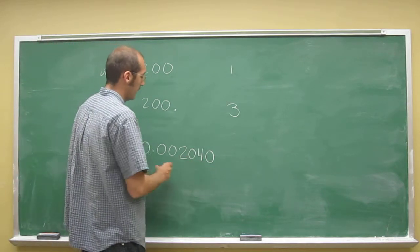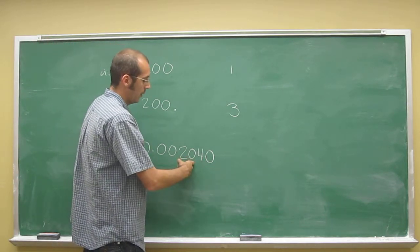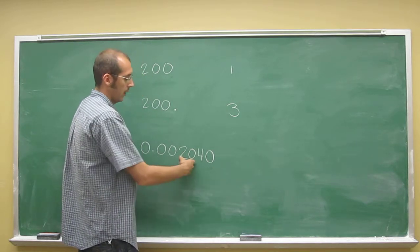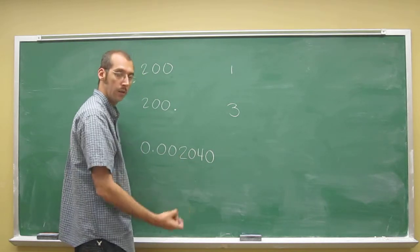But anyways, this is a good problem because it's got leading zeros, captive zeros, and trailing zeros. So the captive zeros, like we said, are always significant.